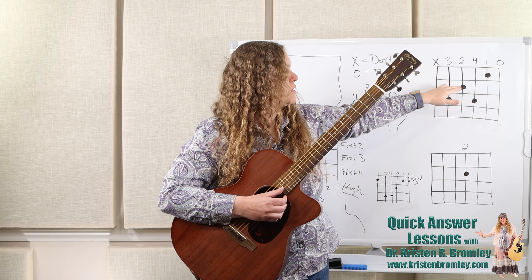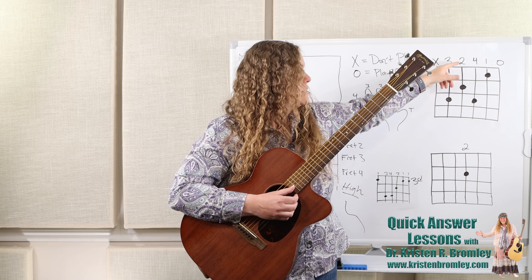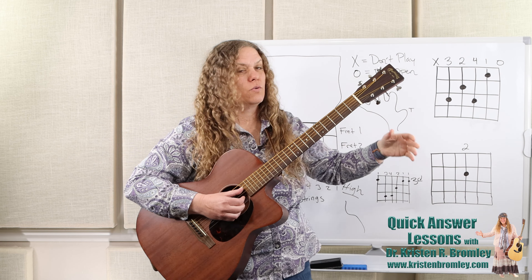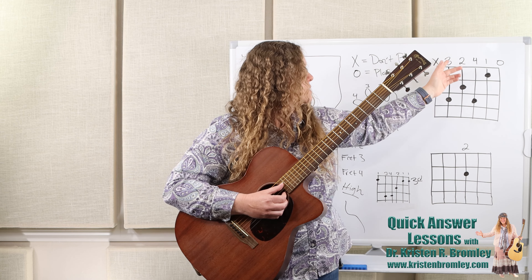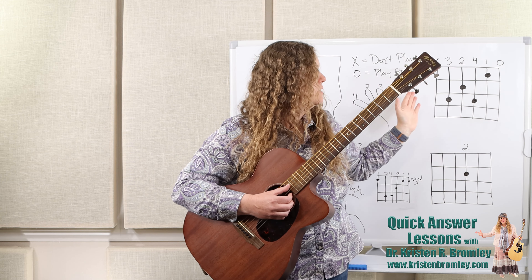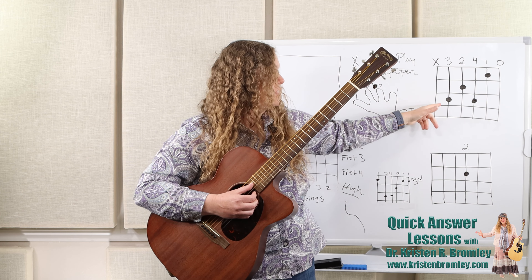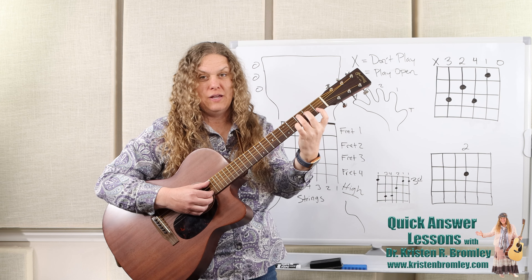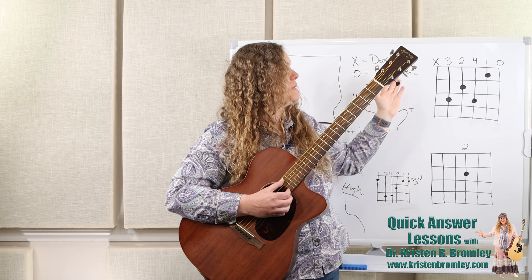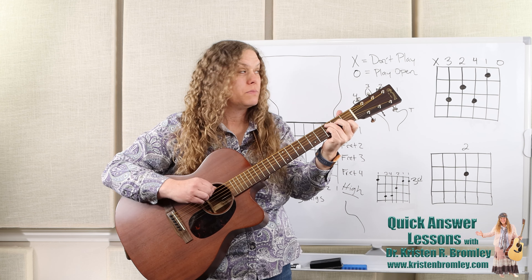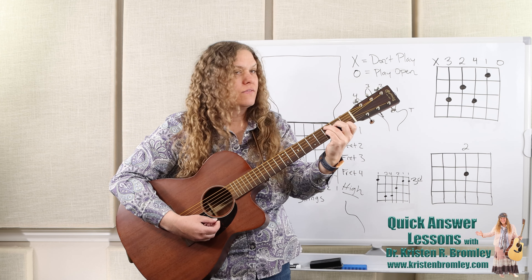Then I look for where my middle finger goes — it's on the fourth string, second fret. Ring finger is on the fifth string, third fret. Pinky is at the third fret of the third string. Then I see that I strum the top string open but don't strum the sixth string. And that gives me my C7 chord.